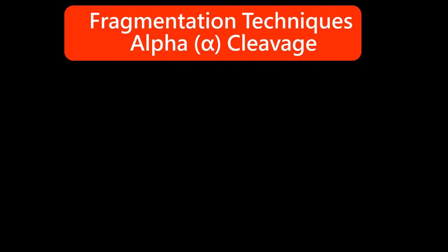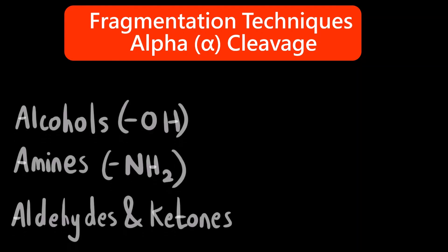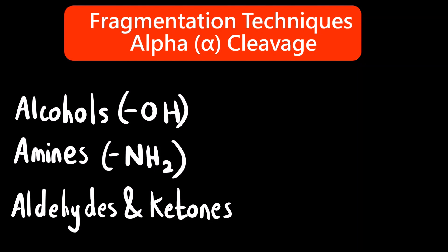Hello everyone, welcome to Chemezon Complete Chemistry. In today's video we are going to see the fragmentation techniques, that is the next topic in mass spectrometry chapter, and one of the techniques is alpha cleavage that we will see in this video. We will see three compounds: alcohols, amines, aldehydes and ketones — these are the compounds where we will see how alpha cleavage is performed.